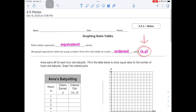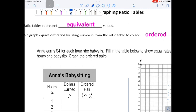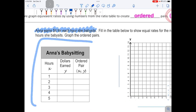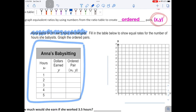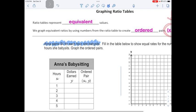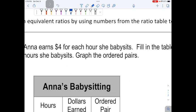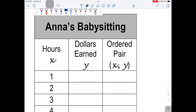Okay, let's jump right into today's problem. It says Anna earns $4 for each hour she babysits. She doesn't make a whole lot of money there. The next sentence says fill in the table below to show the equal rates for the number of hours she babysits. When I go back to this sentence and it says Anna earns $4 for each hour she babysits, I see that this word here does not have an s, which tells me each time she works for one hour, she gets $4. So if I'm going to fill in this table, the easiest one is the top line.